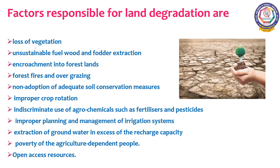Factors responsible for land degradation include loss of vegetation, caused due to deforestation as there is growing demand for wood. Unsustainable fuel wood and fodder extraction is another factor — fodder is the food for cattle. Encroachment into forest lands, where forest areas are converted into habitation, and forest fires and overgrazing are also reasons for land degradation.